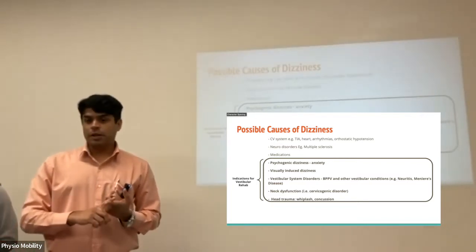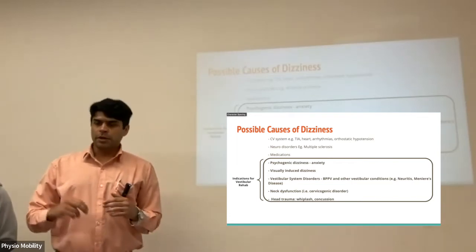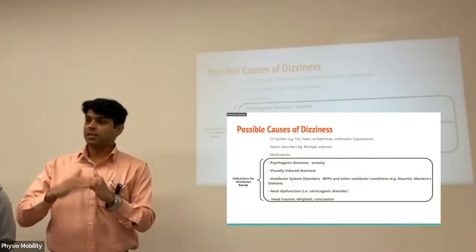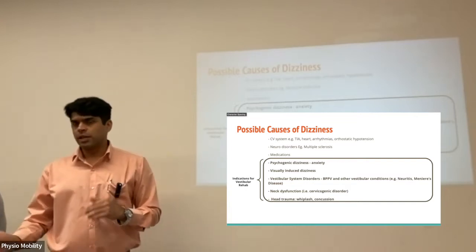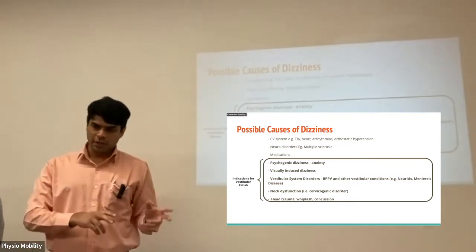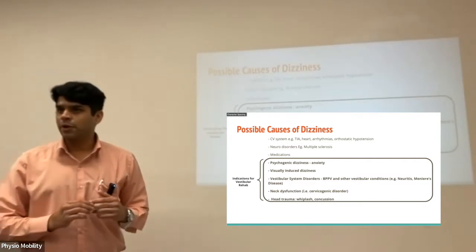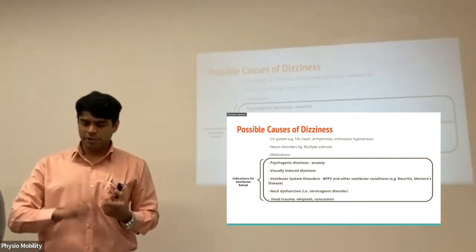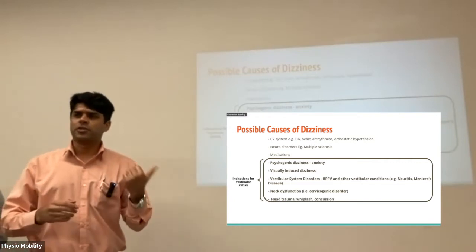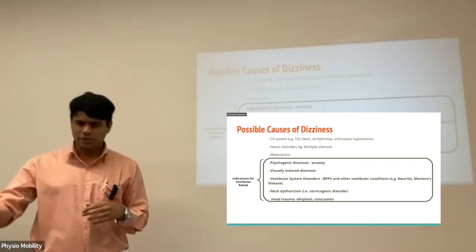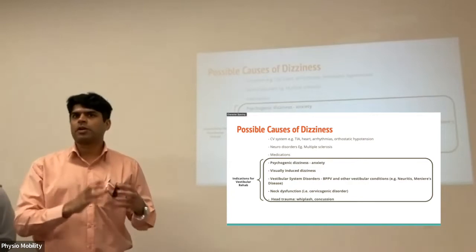Visually induced dizziness — your vision is a very important component of the balance system. Any dysfunction in the visual system can also lead to dizziness, and there are exercises and interventions we can do to help improve upon that. Vestibular system disorders — which is basically the crux of everything we're talking about here. BPPV, which is benign paroxysmal positional vertigo, as well as other vestibular conditions such as vestibular neuritis and Meniere's disease. Vestibular system disorders are the bulk of the conditions we treat when talking about vestibular rehabilitation.